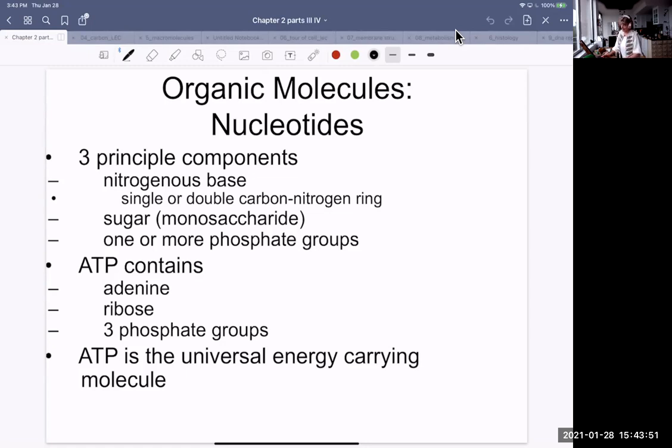Let's look at organic molecules, and in particular, nucleotides. There's three principal components to any nucleotide: a nitrogenous base, called that because it's got a bunch of nitrogens attached to it; a sugar, monosaccharide, generally a ribose, a five-carbon sugar; and one or more phosphate groups.